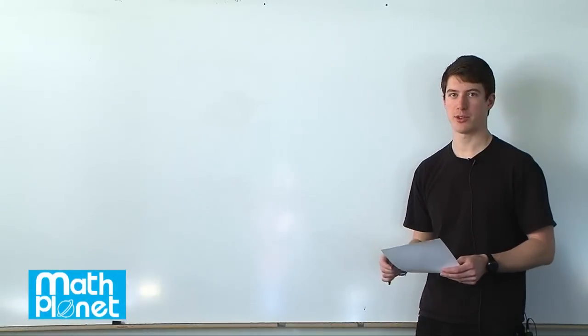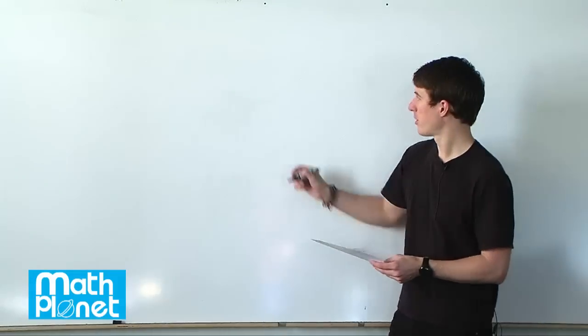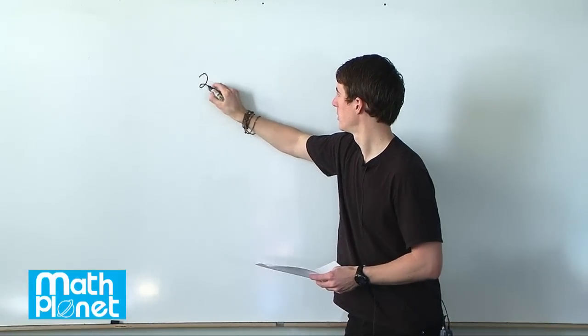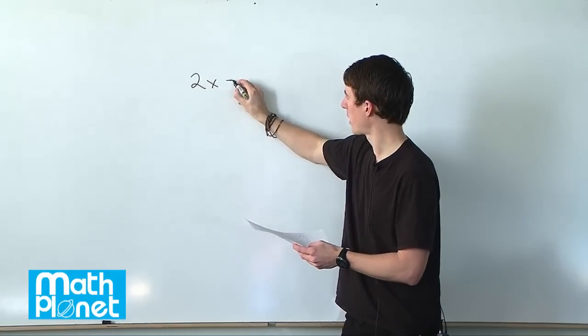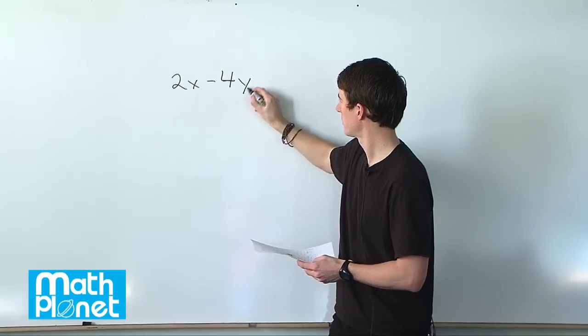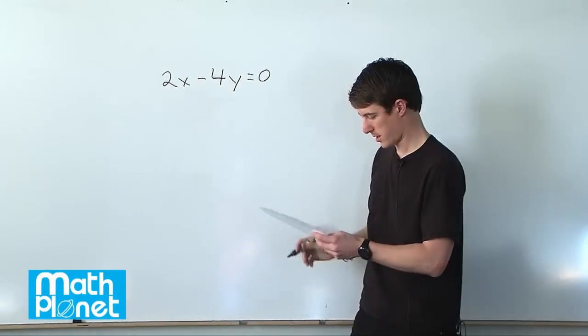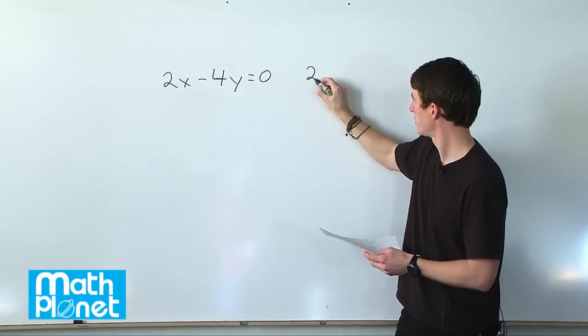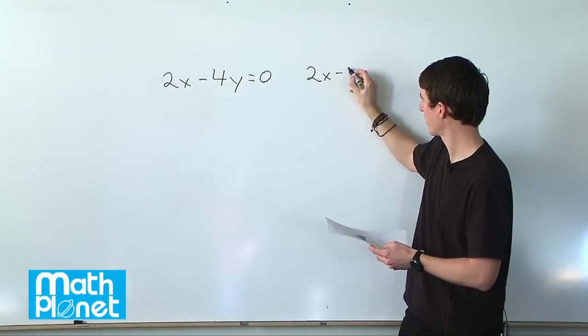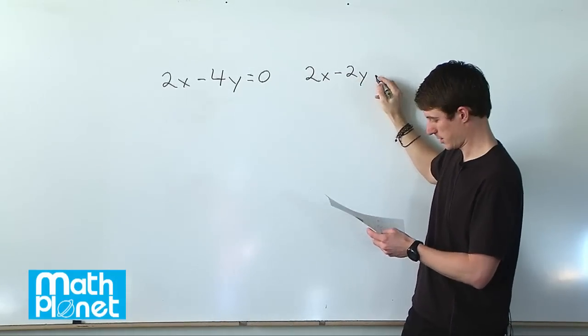Here we have a system of two algebraic equations. Those equations are 2x minus 4y equals 0 and 2x minus 2y equals 2.